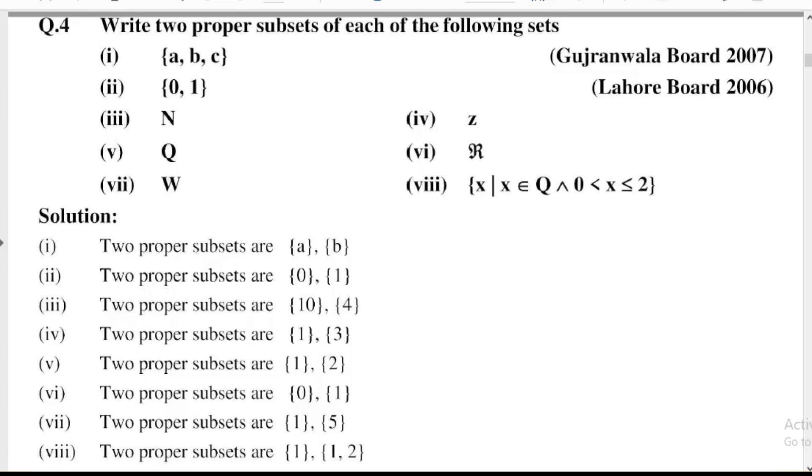Part number 5: Q, where Q means rational numbers. So two proper subsets of rational numbers are {1}, {2}.